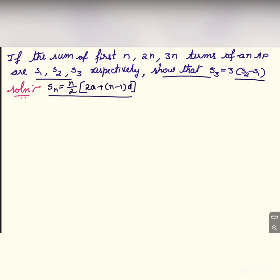This is the sum formula for an AP. Sn is equal to n by 2 into 2a plus n minus 1 into d.